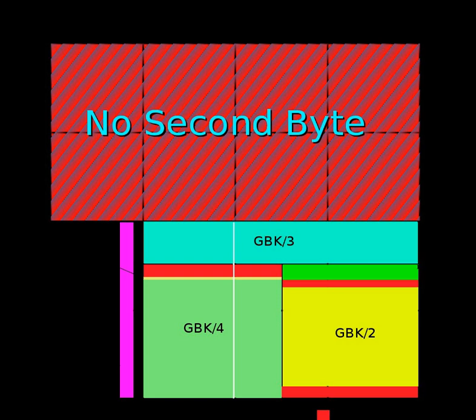Due to the backward compatibility of the mapping, many files in GB18030 can actually be opened successfully as the legacy code page 936, that is GBK, even if code page 54936 is not supported. However, that is only true if the file in question contains only GBK characters. Loading will fail or cause corrupted results if the file contains characters that do not exist in GBK; see the technical details section for examples.